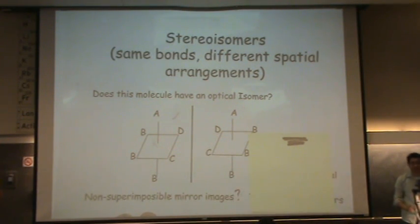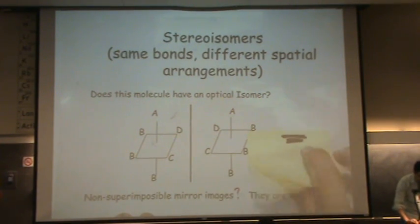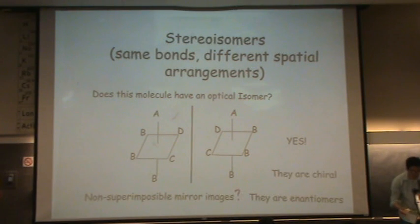So these are not the same thing. And I'll probably have to show you with a model. So yes, it does have an optical isomer. They are chiral. Let me show you why.